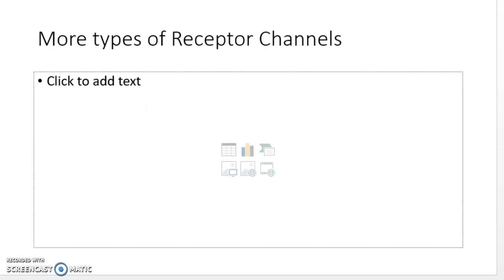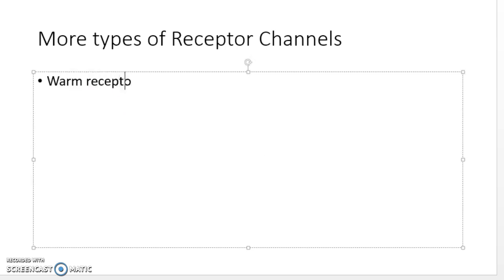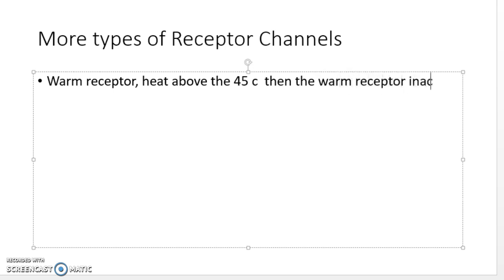Warm receptors are slowly adapting receptors. If the skin temperature rises to damaging levels, the warm receptors become inactive. Warm receptors do not respond to heat above 45°C — at that point, the warm receptors become inactive.